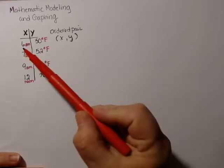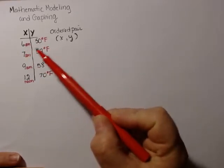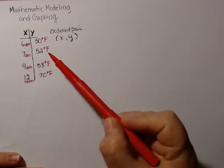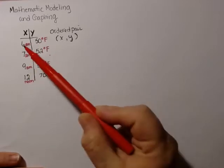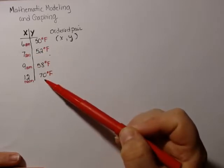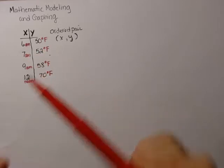So at 6 a.m. it's 50 degrees, but at 7 a.m. it's 52 degrees. So what's happening as we go, as the day goes on, the temperatures increase.